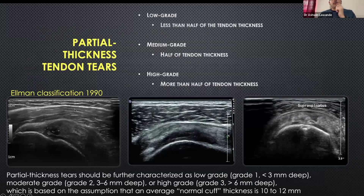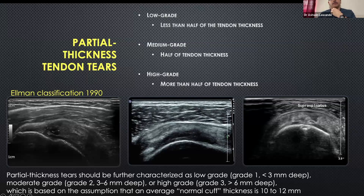That's how we grade partial thickness tears. When it's involving less than half the tendon thickness, it's low grade. If it's involving around half the tendon thickness, it's medium grade, and more than half the tendon thickness, it's high grade.